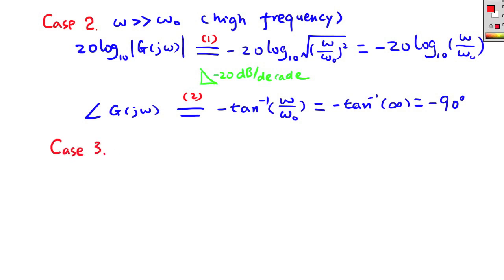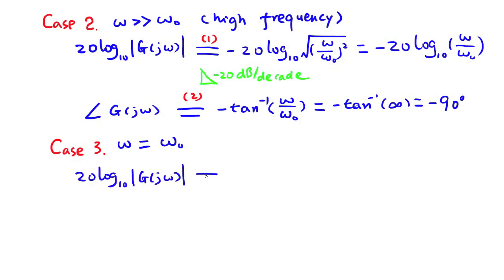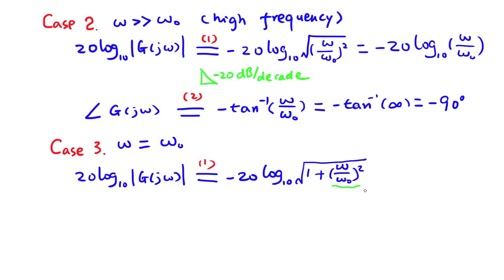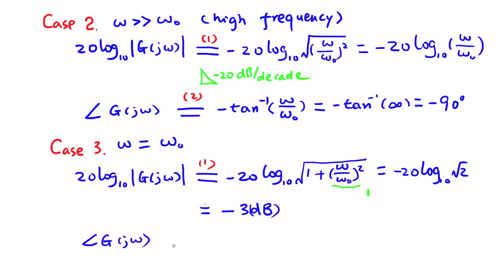Case 3: when the excitation frequency equals the break frequency, the decibel gain can be found from 1 plus (omega/omega_0) squared with omega/omega_0 equal to 1, which gives negative 3 dB. That is why at the break frequency, the gain is also called the 3 dB point.